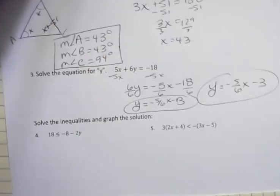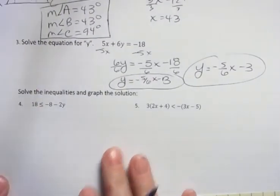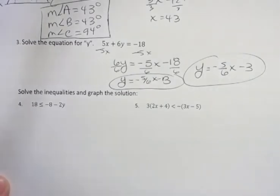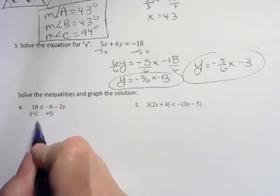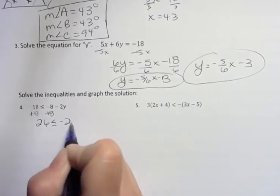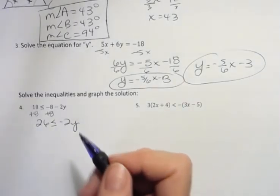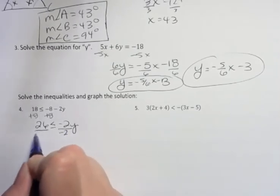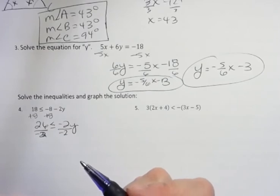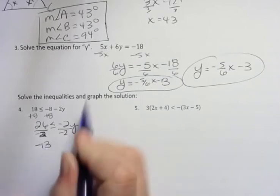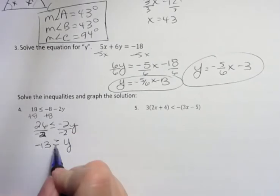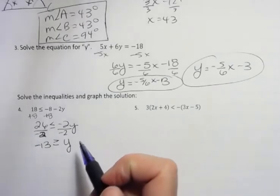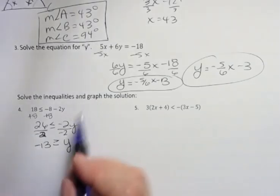And then solve the inequalities and graph. Solving an inequality is just like solving an equation with the extra thing of, do you flip the arrow or not? So I'm going to add 8 to both sides to start. And then I get 26 is less than or equal to negative 2Y. And then I divide by negative 2. If I multiply or divide by a negative, then I have to reverse the direction of the arrow. This is 26 divided by negative 2 is negative 13. These two negatives go away. I have to reverse the direction of the arrow now because I'm divided by a negative. And in the original video where I teach this, I explain why we flip the arrow. You can go back and watch that.